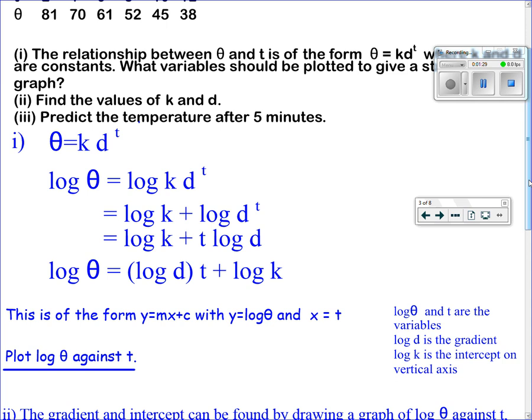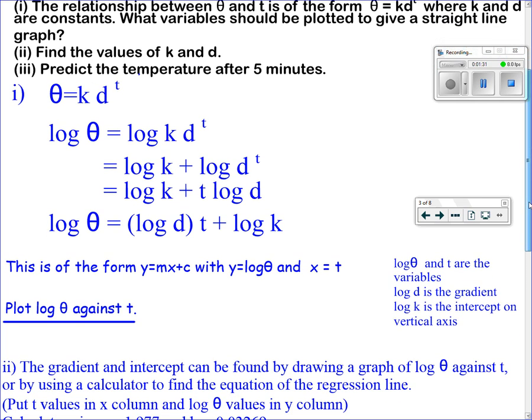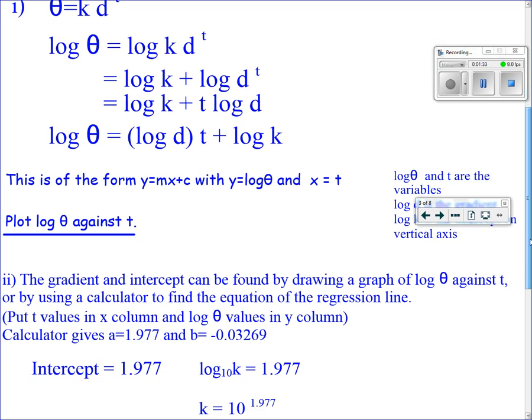The gradient and intercept can be found by drawing a graph of log θ against t on graph paper, or by using a calculator to find the equation of the regression line.